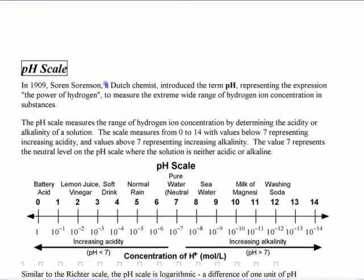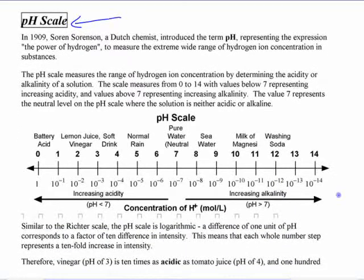But pH scale is another example of a logarithmic scale because the numbers you're comparing are such vastly different magnitudes you can't compare them on a linear scale. Neutral pure water is defined to be seven on this scale. It has to do with the concentration of hydrogen ions in the water.